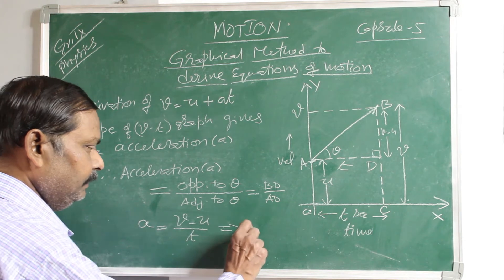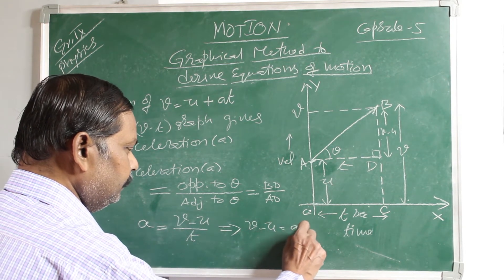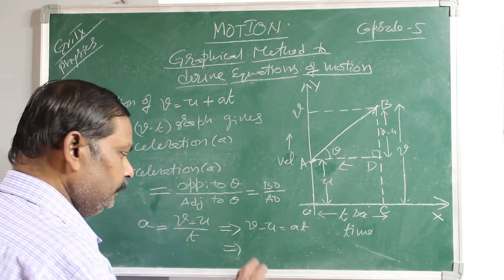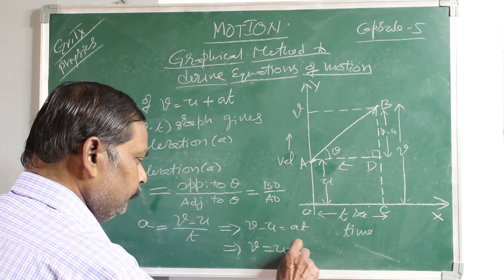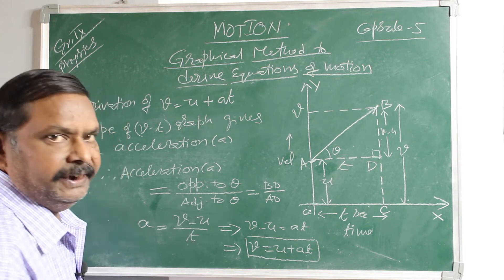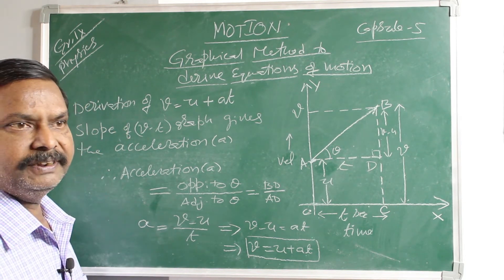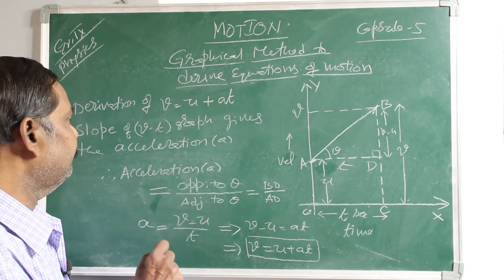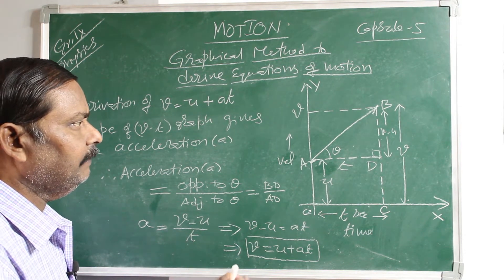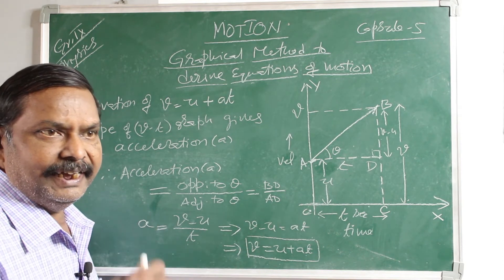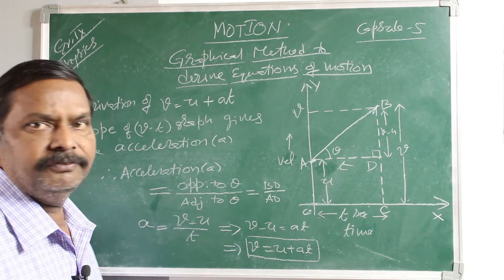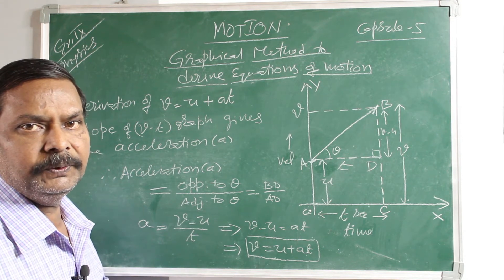Cross-multiplying, you get V - U = A × T, and taking -U to the other side gives +U. Then you get V = U + AT. This is the derivation of the first equation of motion. This derivation depends upon the principle that the slope of the VT graph gives acceleration, and slope is opposite by adjacent — or in higher mathematics, tangent of the angle theta.